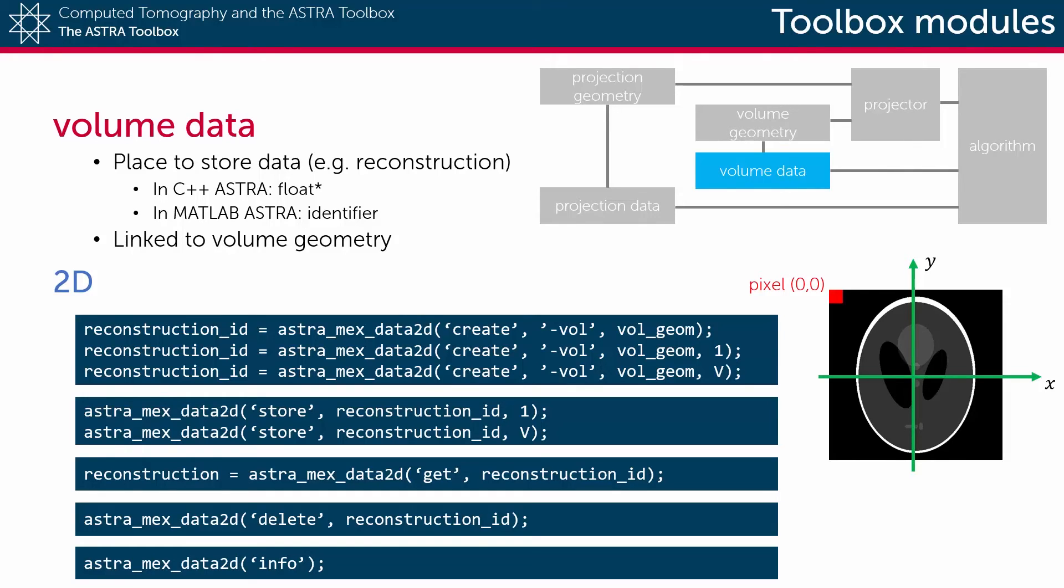And last but definitely not least, the delete functionality deletes the data from the Astra memory and frees up its space. This is of course very important because otherwise the system memory might fill up. To see which data objects are currently stored in the Astra memory you can use the info argument.